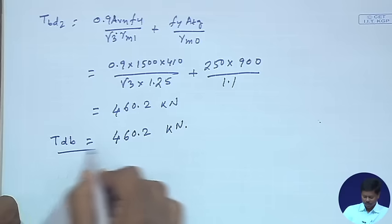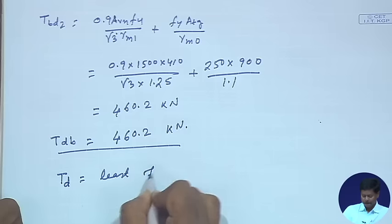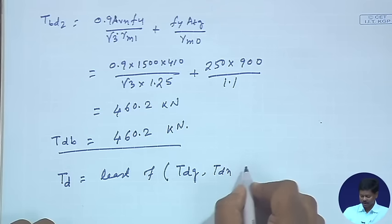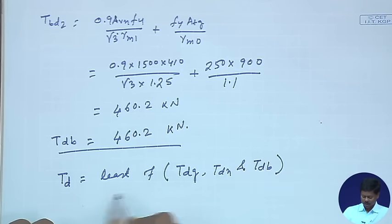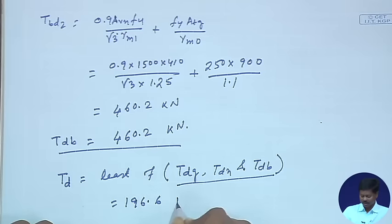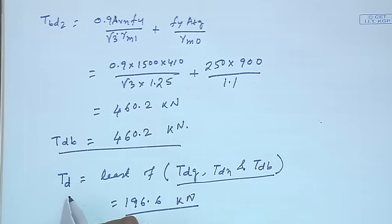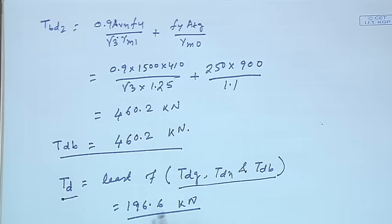The design tension strength is the minimum of Tdg, Tdn, and Tdb — that is, min(196.6, 234, 460.2) = 196.6 kN. So the design strength of the weld connection when the longer leg is connected is 196.6 kN, governed by gross section yielding.